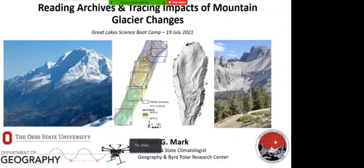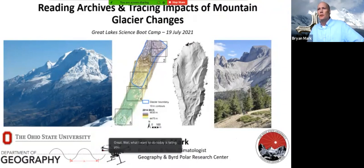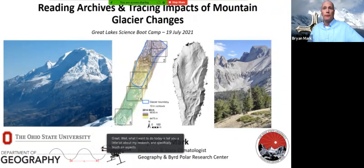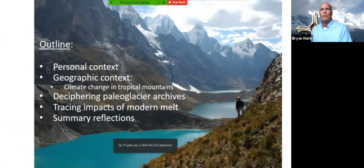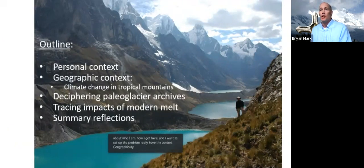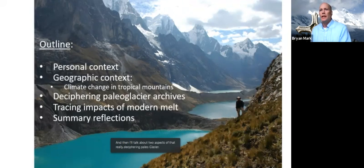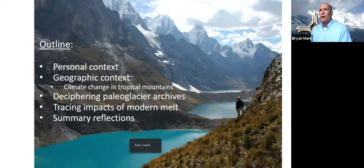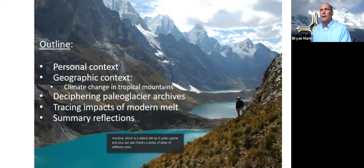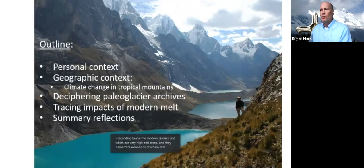What I want to do today is tell you a little about my research and specifically touch on aspects where libraries have made a big difference. I'll give a personal context about who I am and how I got here, set up the geographic problem of climate change and tropical mountains, then talk about two aspects: deciphering paleo glacier archives and tracing impacts of modern melt. The backdrop photo here is in the Andes — you can see me on the edge of an old moraine, with a series of lakes of different colors descending below modern glaciers, demarcating extensions of where glaciers were in the past.